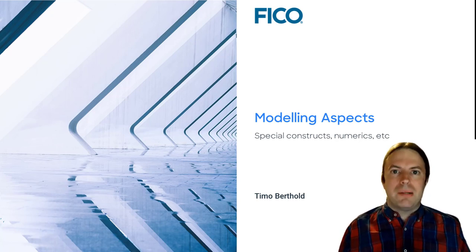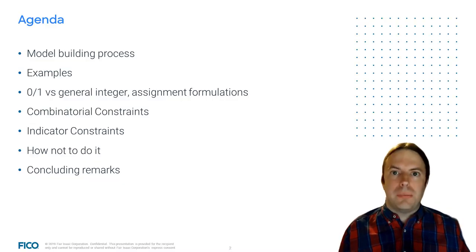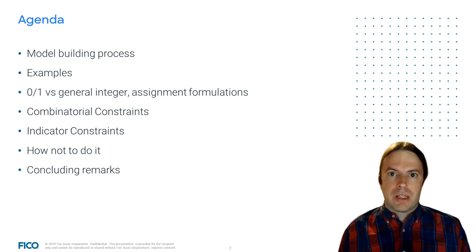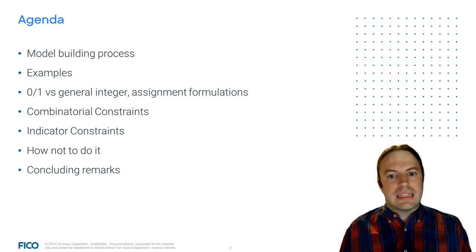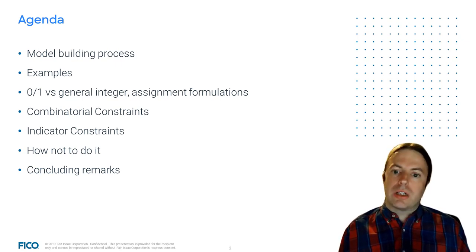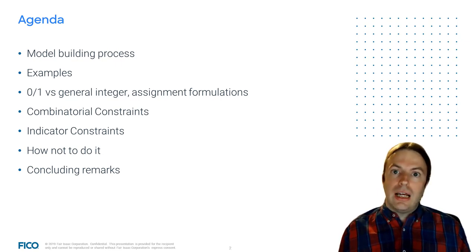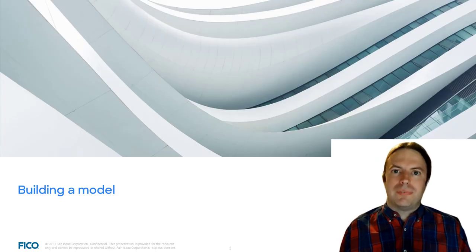Welcome everybody to this lecture on building mathematical optimization models. The agenda looks as follows. First, we will look into the model building process and discuss each individual step of it. Then we will study some examples of optimization models. We will discuss aspects like the usage of binary variables versus general integer variables, and present some general constraints such as combinatorial or indicator constraints. Finally, we will present some advice on how to build good models and also how not to do it. Let's get started.